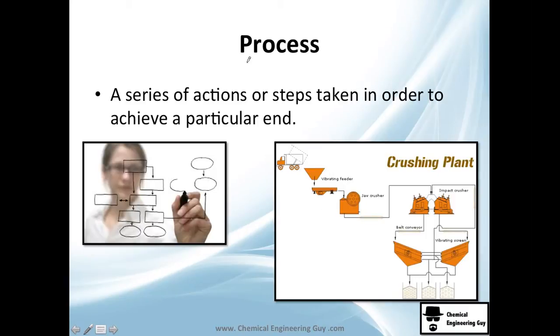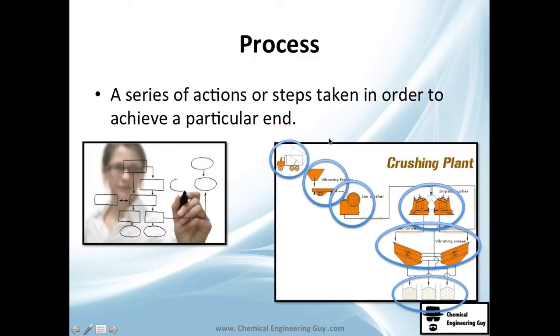Now, let's continue. I told you we're going to see process. Let's give a formal definition of process. Process is simply a series of actions or steps taken in order, it's important, in order, to achieve a particular end or product. You may see, you start here, you go here, then you go here, you finish here, etc. I'd like to present you a better diagram of crushing plant. Crushing plant is nothing but this process here.